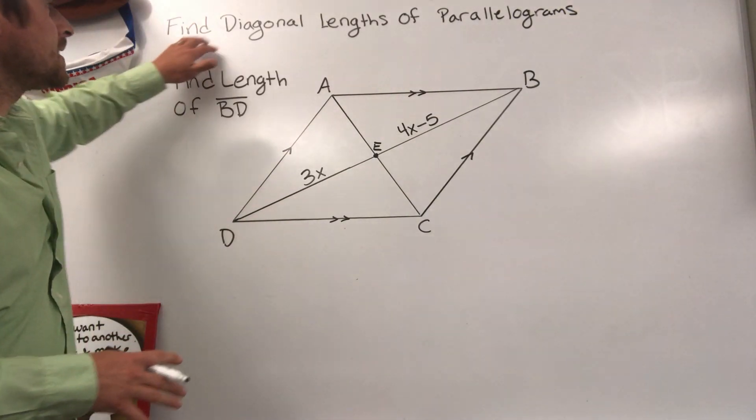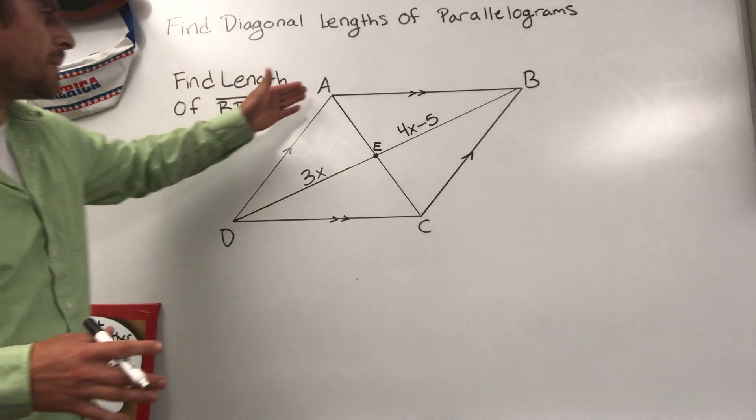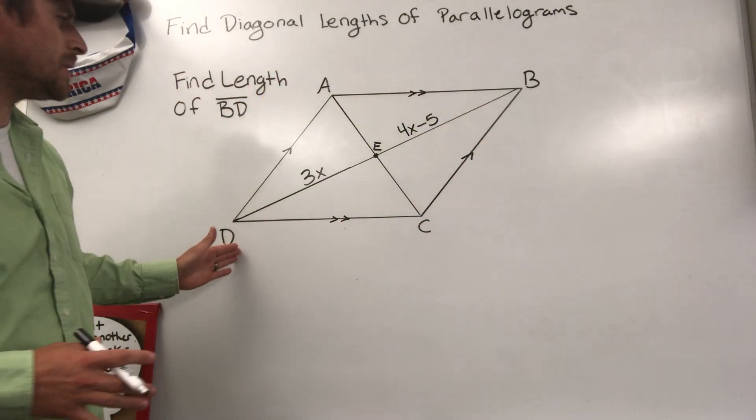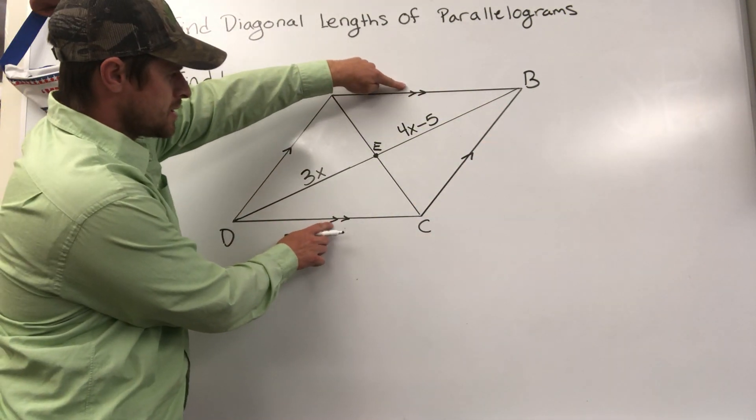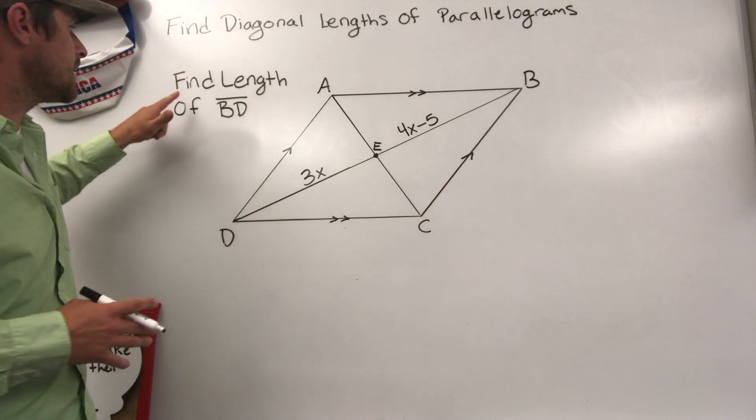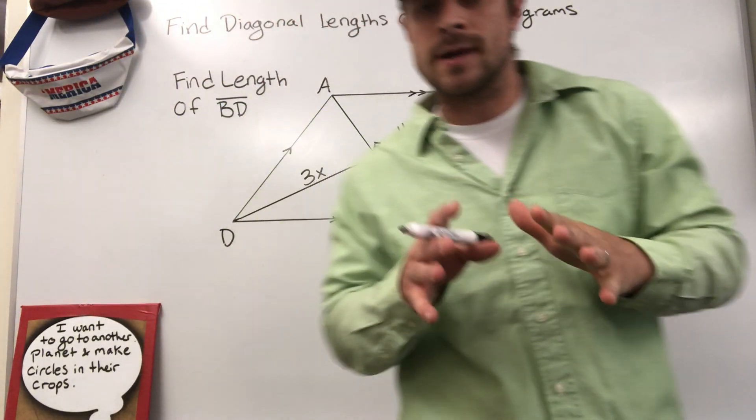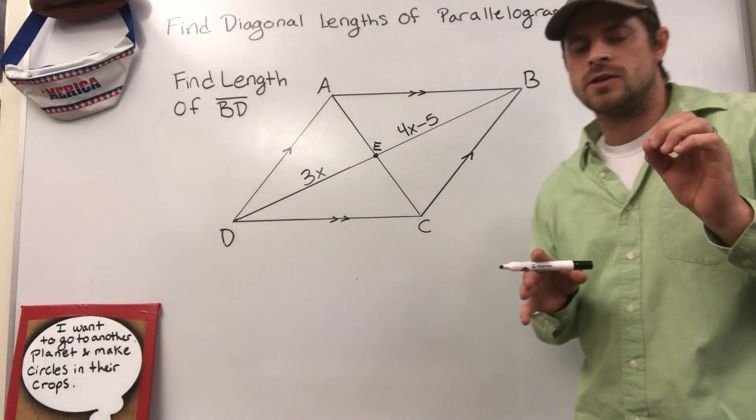All right, in this video I'm going to show you how to find the diagonal lengths of a parallelogram. We're dealing with parallelogram ABCD. We know it's a parallelogram because these arrows indicate that opposite sides are parallel, and we're being asked to find the length of line segment BD. Stick around to the end because at the very last part of this video...